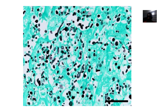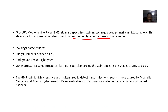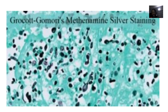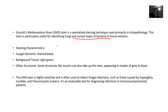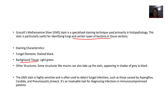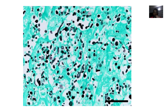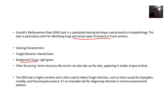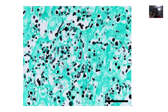So what are the staining characteristics? After you have done the staining — collecting the sample, fixing it, and all of that — if you have fungal elements in the sample, they will turn black. Everything you see black is fungal. If there is background tissue, it will be green — everything green is background tissue. Other structures like mucins can also take up the stain and appear in shades of gray to black. So the fungal elements are black, background tissue is green, and any mucin or additional structures will also appear green.